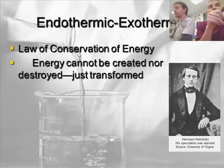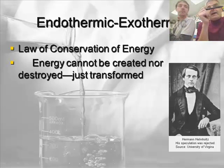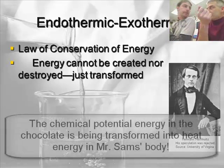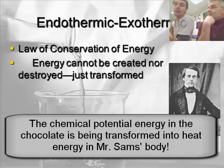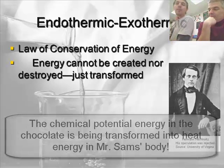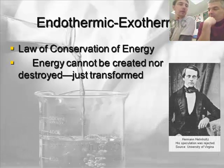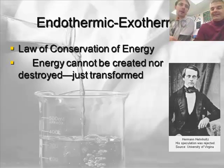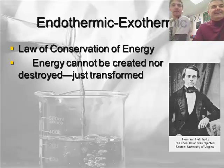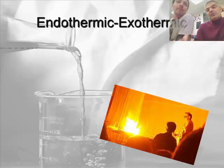For example, Mr. Sams just ate some chocolate, and so it was chemical potential energy. Now it has been converted into heat energy to heat his body. And if it doesn't, then it's going to go back into chemical energy and it's going to get stored as fat — as chemical energy in his body, which is why he needs to go walk an extra mile and a half tonight on the treadmill.